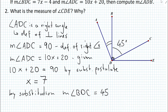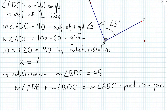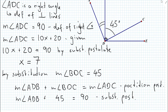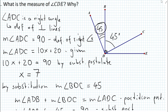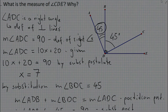How do we get the measure of angle ADB? First, we write that the measure of angle ADB plus the measure of angle BDC is equal to the measure of angle ADC by the partition postulate. Then, the measure of angle ADB plus 45 is equal to 90 by substitution. And finally, the measure of angle ADB is equal to 45, because we subtracted on both sides.